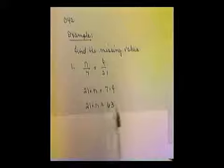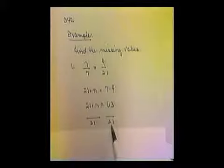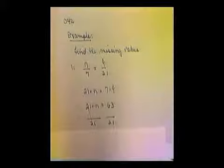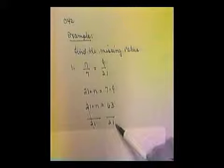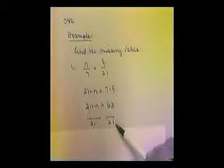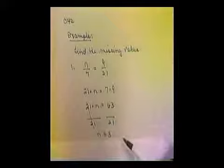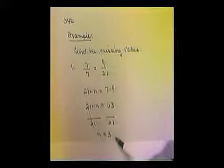We get 21n is equal to 63, because 7 times 9 is 63. So we want to divide both sides by 21. Here the 21s cancel. And now what is 63 divided by 21? We find out that the value is 3.